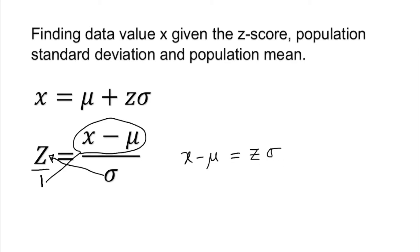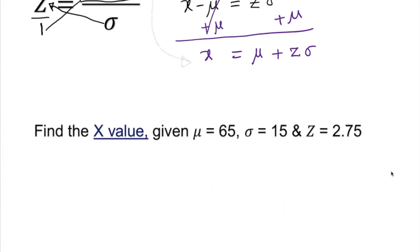Add population mean to both sides. This is going to get cancelled. I have x equals population mean plus z times the standard deviation. Look, this formula and the one we started with are exactly the same thing. Let's take a look into an example.